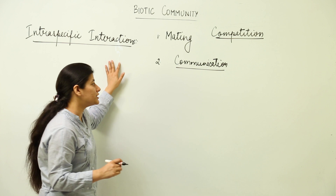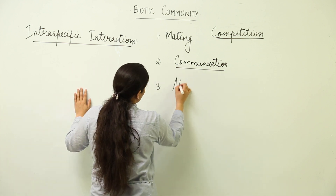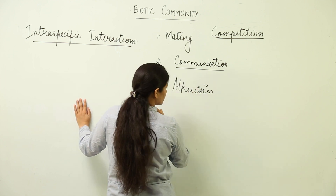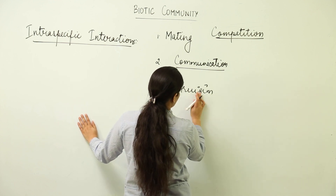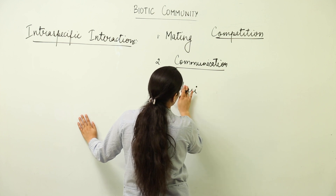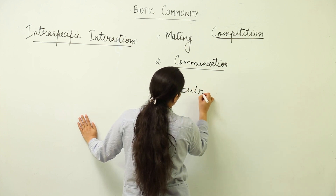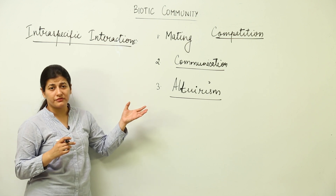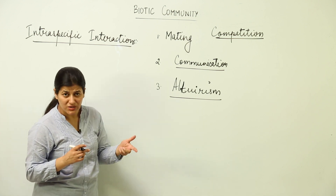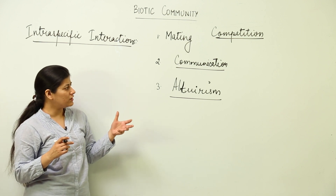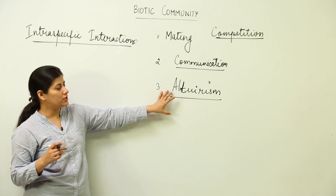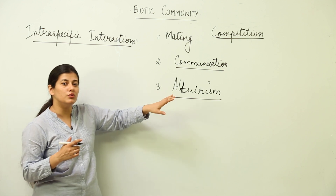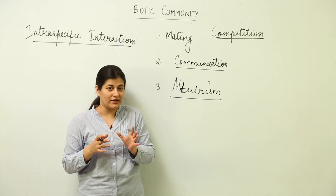Moving further, we have a special type of social behavior shown by animals, known as altruism. This is also a psychological term that you may know from studying human behavior. In common usage, altruism is understood as a behavior where you seek the benefit of others — a sacrificing nature, where by your activity you are prioritizing the benefit of another person.